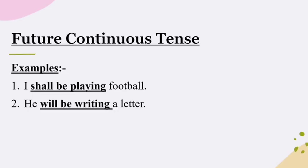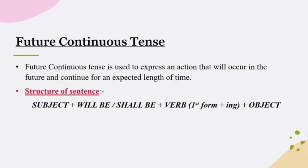Now let us move on to the next form of Future Tense, that is Future Continuous Tense. Example 1: I shall be playing football. Example 2: He will be writing a letter. The underlined words 'shall be playing' and 'will be writing' refer to actions that are likely to occur in the near future and will continue for an expected length of time. Future Continuous Tense is used to express an unfinished action or event that will be in progress at a time in the future.